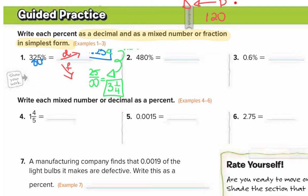Number 2. 480 percent - you want to write it as a decimal, then as a fraction. Again, this is a percent, so percent to decimal we move it two to the left. We get 4.80, but you don't need the extra zero in the back of the decimal. So your decimal is 4.8.